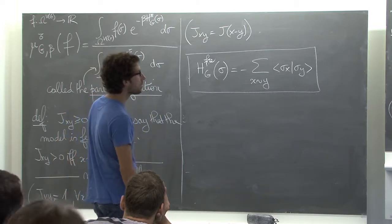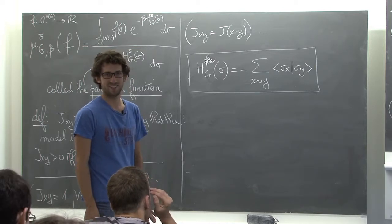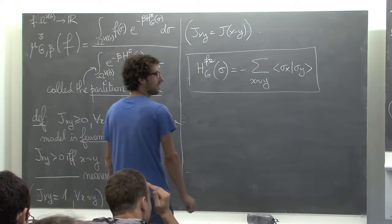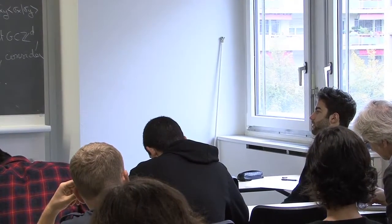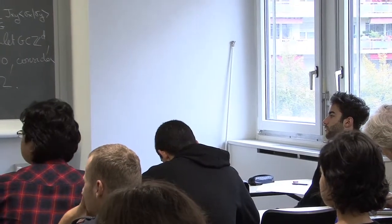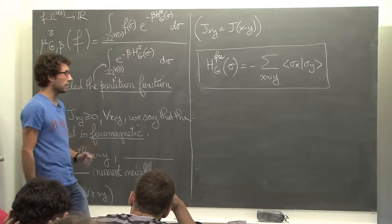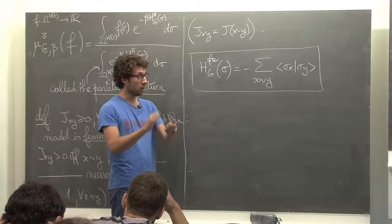Are there questions on the definitions? Someone had a question: when every coupling constant is positive, the model is ferromagnetic — that doesn't mean there is a phase transition. Ferromagnetic means the spins want to be aligned with each other. If you take J_{xy} negative, you have spins that want to be misaligned. This leads to very interesting things like spin glasses. There is a phenomenon in anti-ferromagnetic models called frustration, which makes them very different from ferromagnetic models. So we are going to restrict ourselves to ferromagnetic.